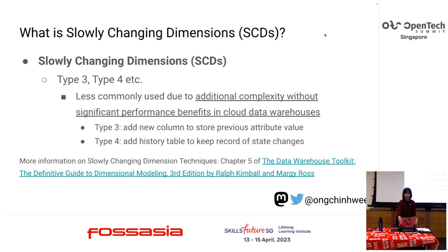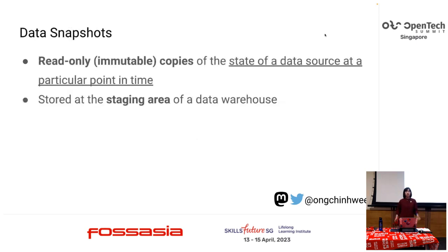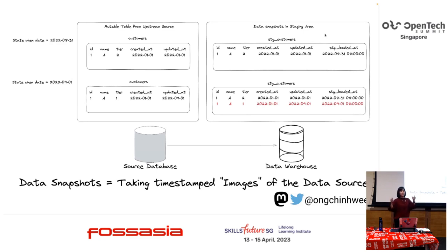Now let's cover more modern approaches. Data snapshots are read-only, immutable copies of the state of a data source at a particular point in time. You store these snapshots in the staging area of the data warehouse by ingesting from the source. Think of it as taking timestamp images — photos of the data at certain intervals. Instead of directly creating SCD2s, you create data snapshots first, and then build your SCD2s from those, so if you make a mistake you still have the snapshots to fall back on.